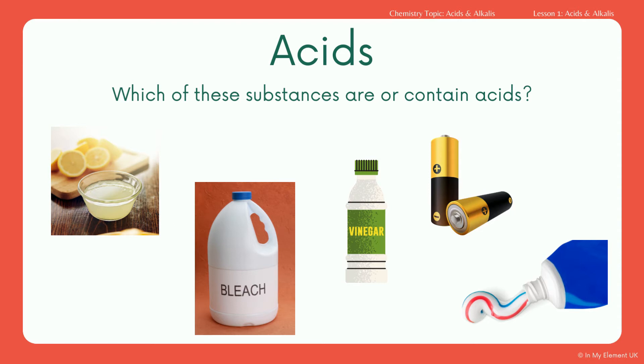There are quite a few household cleaning products that are also alkaline along with bleach, including oven cleaner and the cream cleaner you can use to scrub your sinks with.